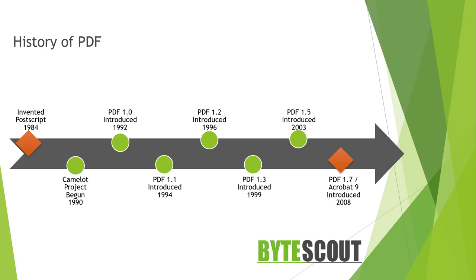Here the progress of different PDF versions is shown on a timeline. Functional improvements were included starting with version 1.1, released in 1994, such as support for external links, spot colors, and plugins. In January 2008, PDF 1.7 became an official ISO standard, and from this point on PDF was no longer a proprietary format.